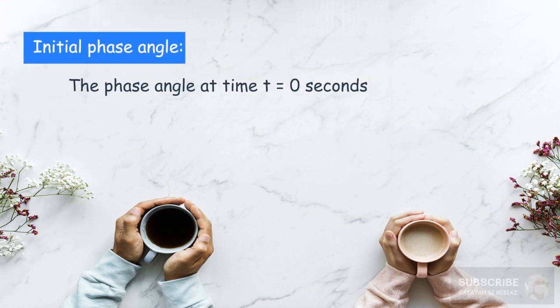The initial phase angle can be defined as the phase angle at time t equals zero seconds. The initial phase angle is often symbolized as theta zero. The international system units for initial phase angle is the radians.